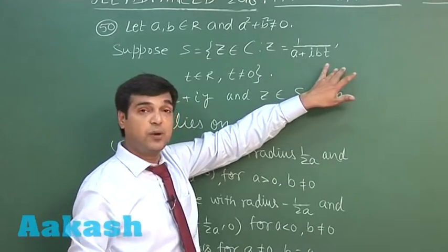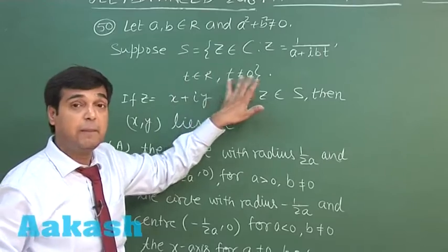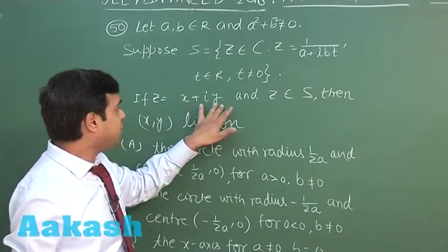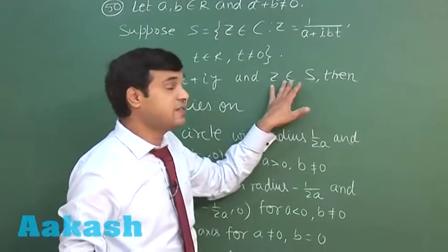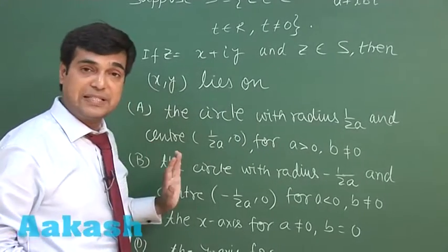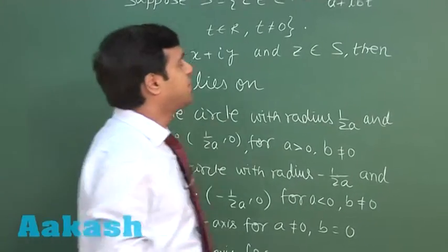If z = x + iy and z is from set S, then (x,y) lies on... four options are given based on the same. Let's try the same.